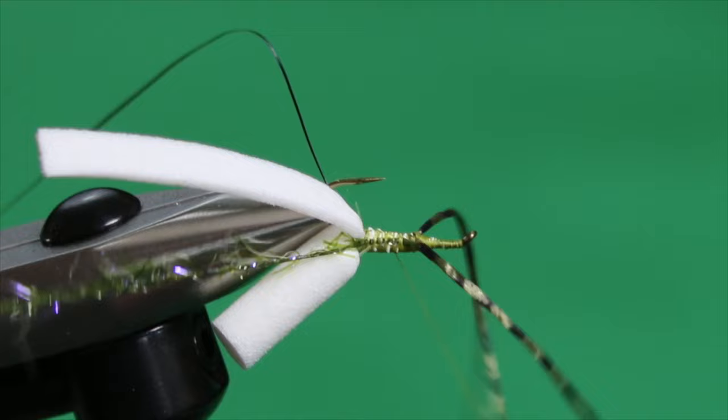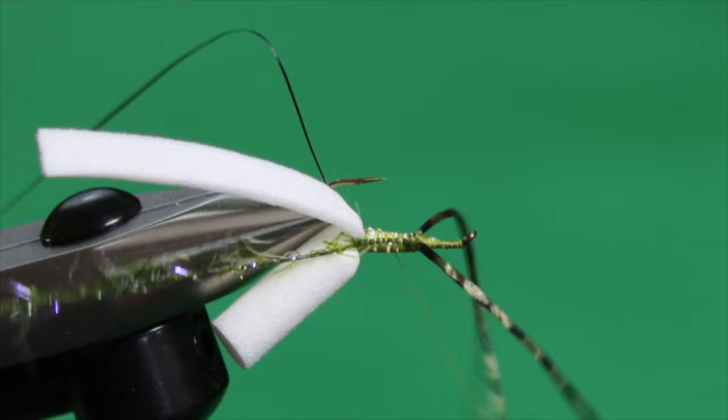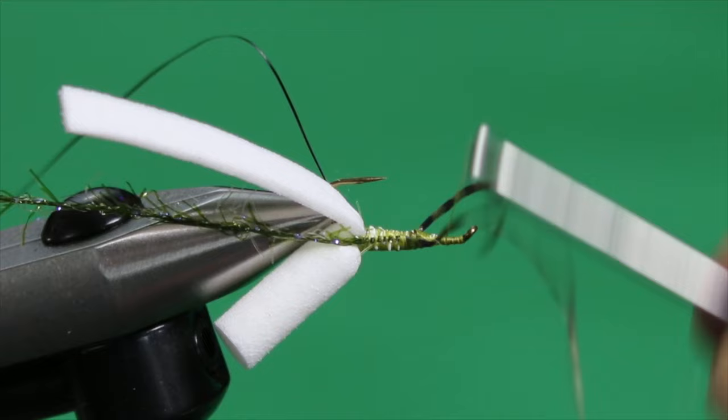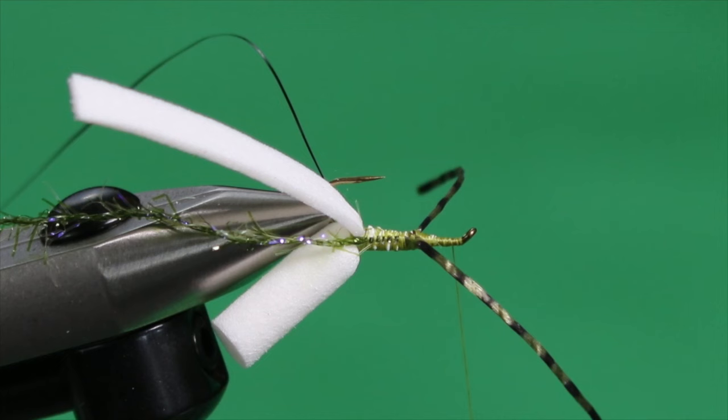Right to the base. Come back up. Being careful not to knock my legs out of position. And leave your thread. You see I've got that thread hanging about the length of the hook eye back. We don't want to crowd the head here.